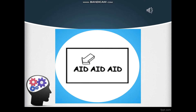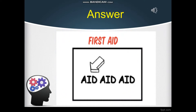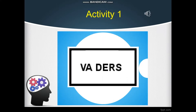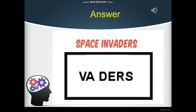Let's do some exercises to practice the different skills. First, what word can you create using the pictures — we have the letter R and the word 'aid'? The answer is 'first aid.' Next, we have a little area and the word V-A-D-E-R-S. The answer is 'space invaders.'